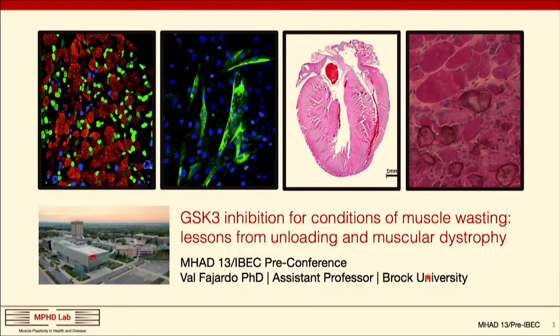Our next speaker is from Brock University, Dr. Val Faiardo. He did his PhD at the University of Waterloo with Russ Tupling, and he's now a Tier 2 Canada Research Chair in Tissue Plasticity at Brock University. I'm going to talk about GSK-3 inhibition for conditions of muscle wasting — lessons from unloading and muscular dystrophy.